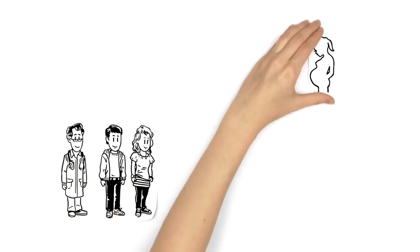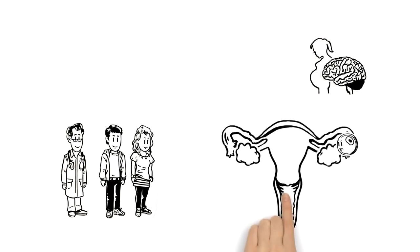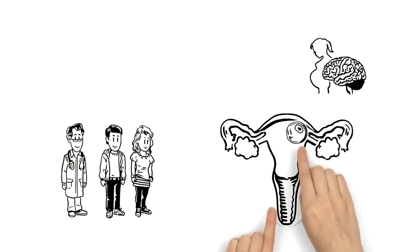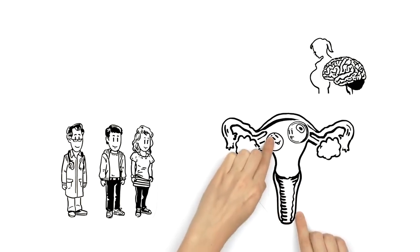In order for a woman to get pregnant, her body releases an egg cell from her ovaries. It moves into the womb where it waits for a sperm cell to fertilize it. If the egg cell is fertilized,